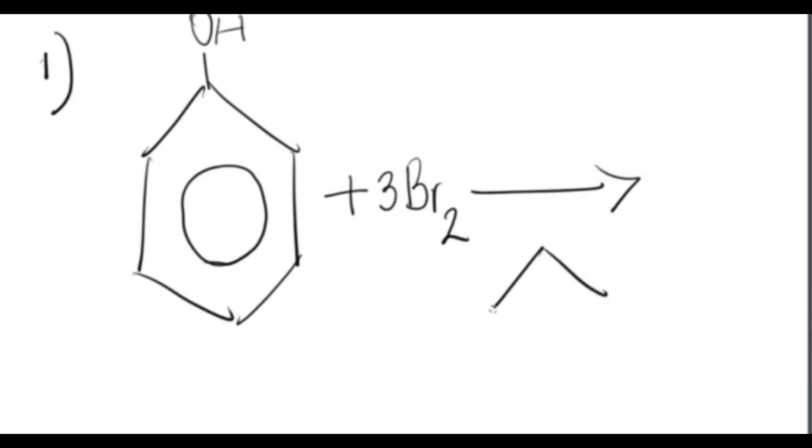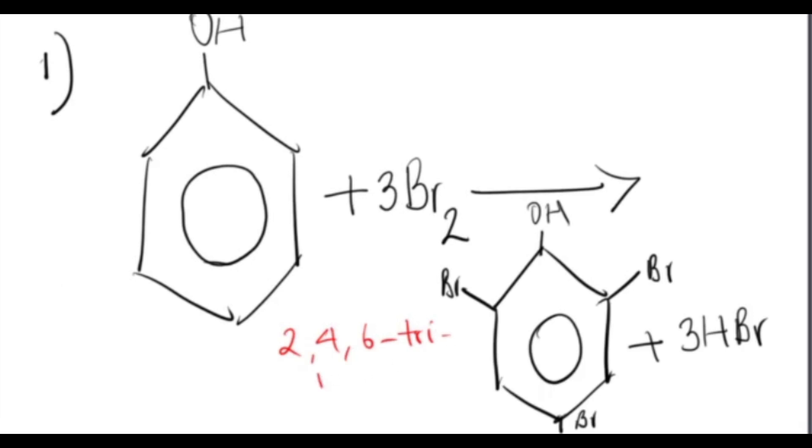So the answer is going to be two four six tri-bromophenol and you're going to get three molecules of hydrogen bromide because you need three molecules of bromine in order to fit it in three places.